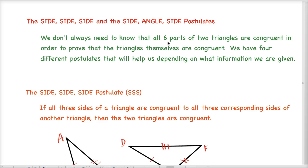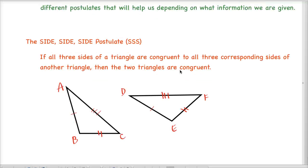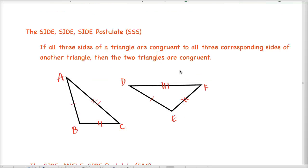It's very specific as to which three those are. We're going to talk about the first two today, and then we'll get into the second two later. So let's take a look at the first postulate — it's called the side-side-side postulate, and you'll see it abbreviated as SSS. You'll be able to use that abbreviation whenever you're writing a proof instead of having to write out side-side-side.